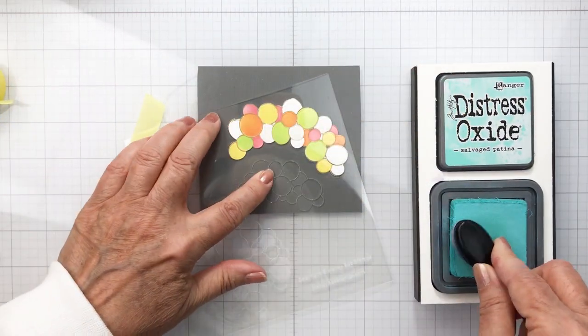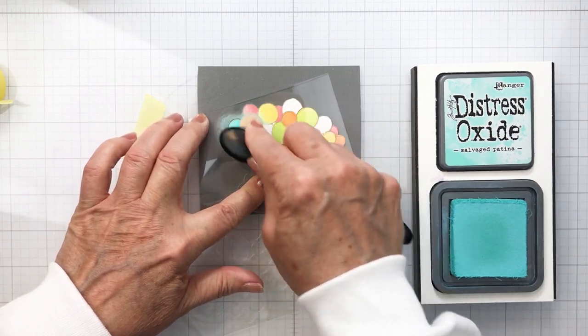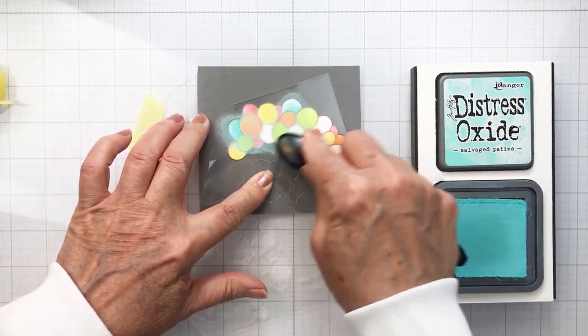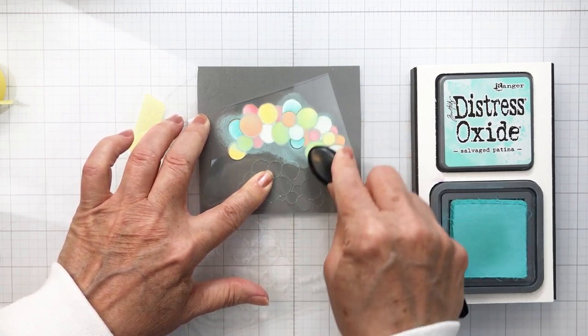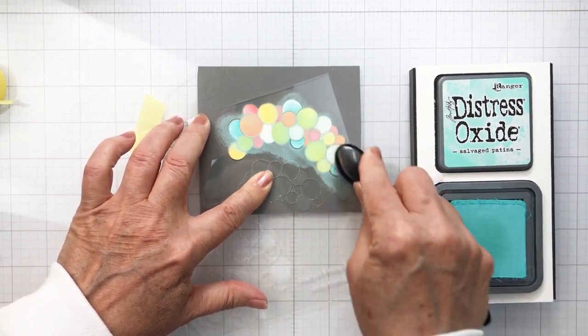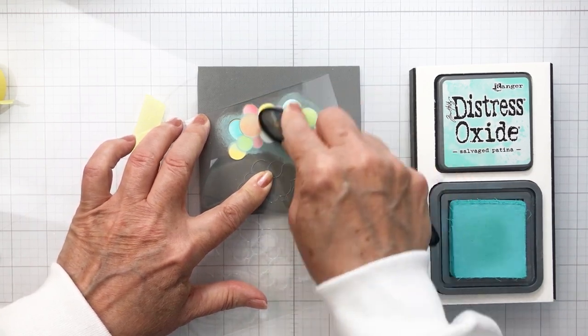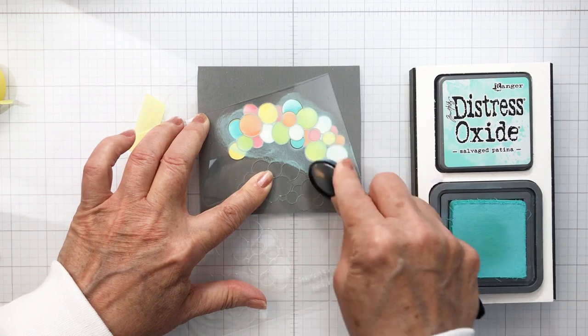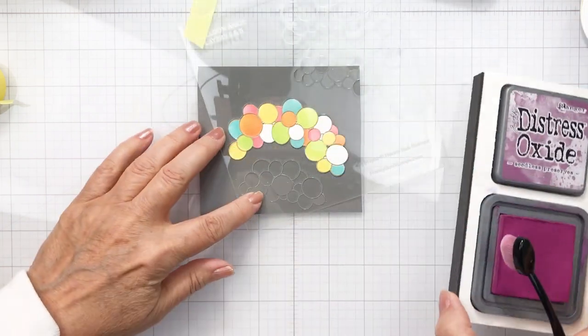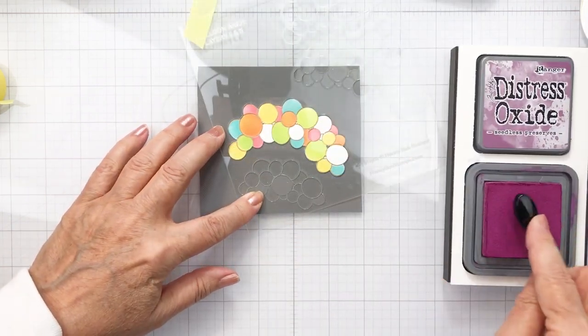I'm using Salvaged Patina next and you can see now I'm on to the third stencil. I'm using the top portion of the third stencil to blend in more of those open spaces on this really gorgeous balloon arch. I love the concept of this balloon arch. I think it's really cute and this is definitely something that is really trendy right now in parties and celebrations.